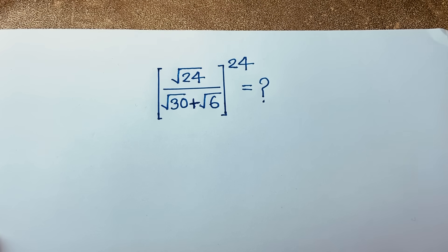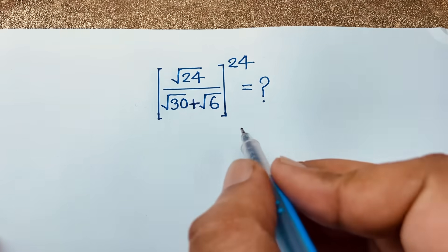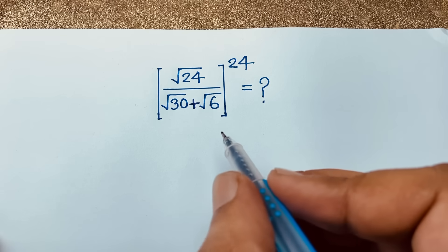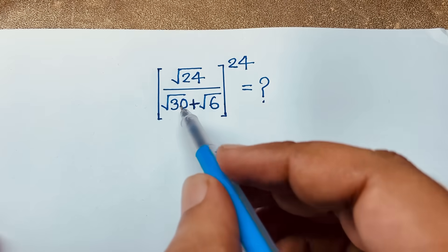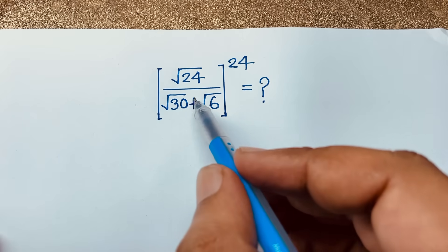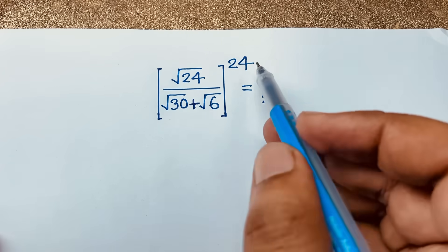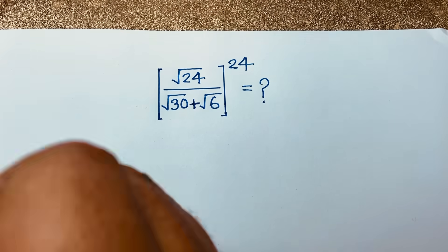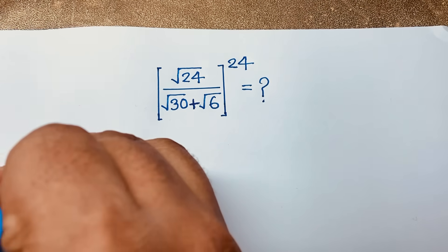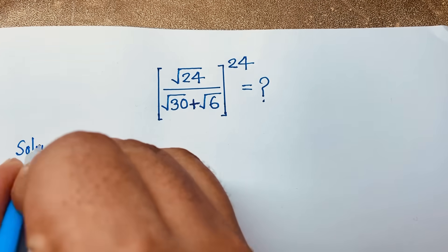Hello everyone, welcome to Russell's Classroom. Today we have solved a nice radical math Olympiad question. This question is: the square root of 24 over (square root of 30 plus square root of 6), whole to the power 24, is equal to what? How to solve this interesting math question — the solution is a long math.